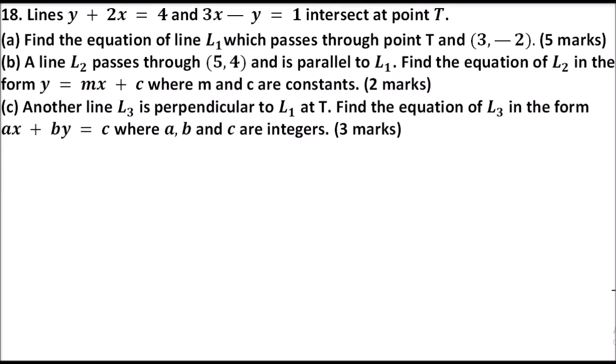We are told lines y plus 2x equals 4 and 3x minus y equals 1 intersect at T. Find the equation of the line L1 which passes through T and the point (3, -2). You get 5 marks. If you have covered gradients and equations of straight lines in Form 2, you should be able to do this question comfortably.